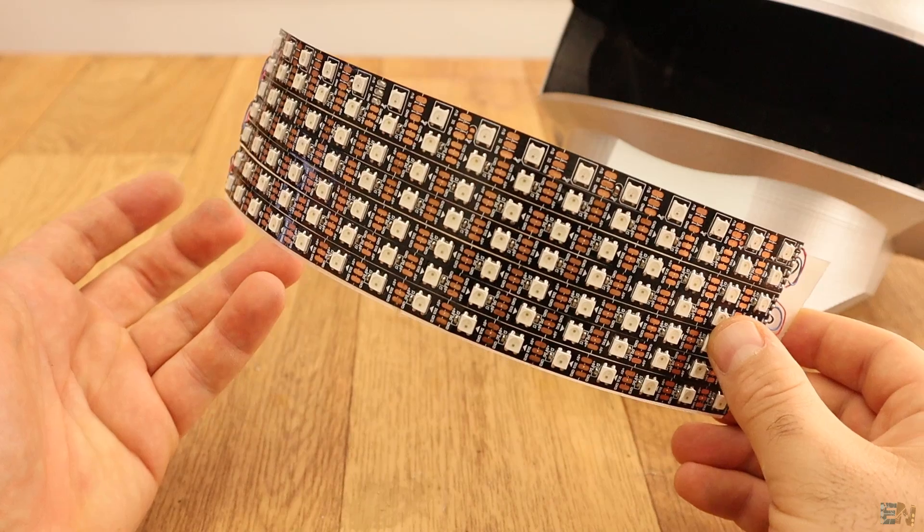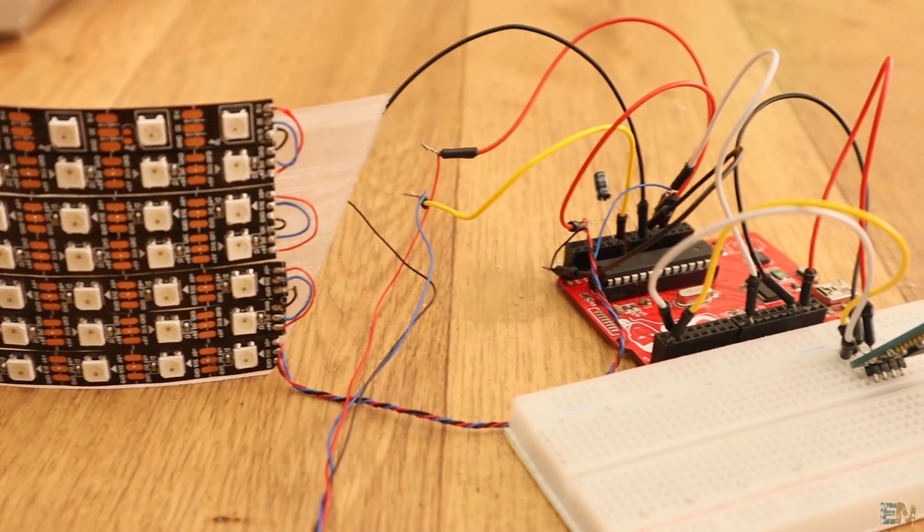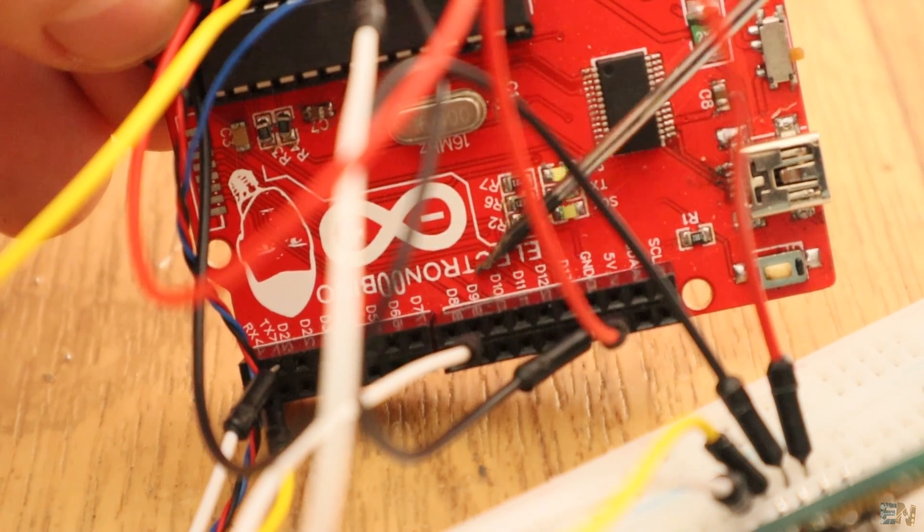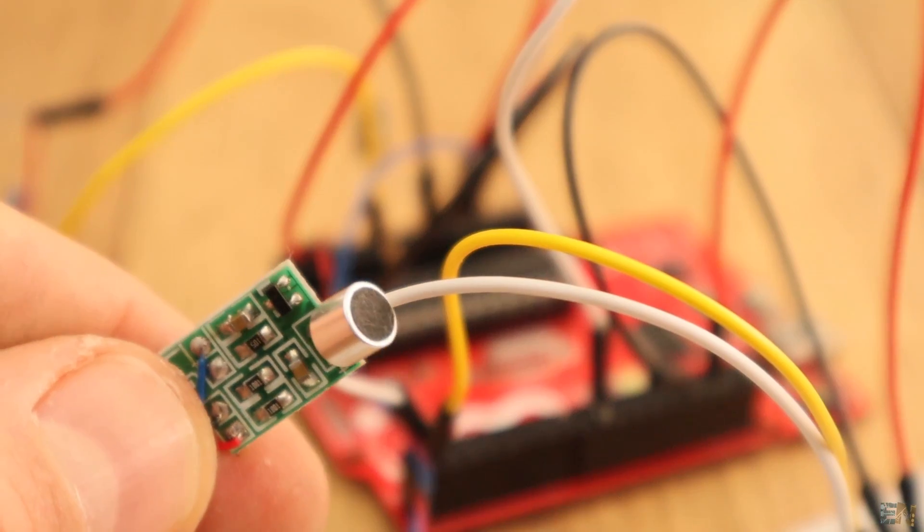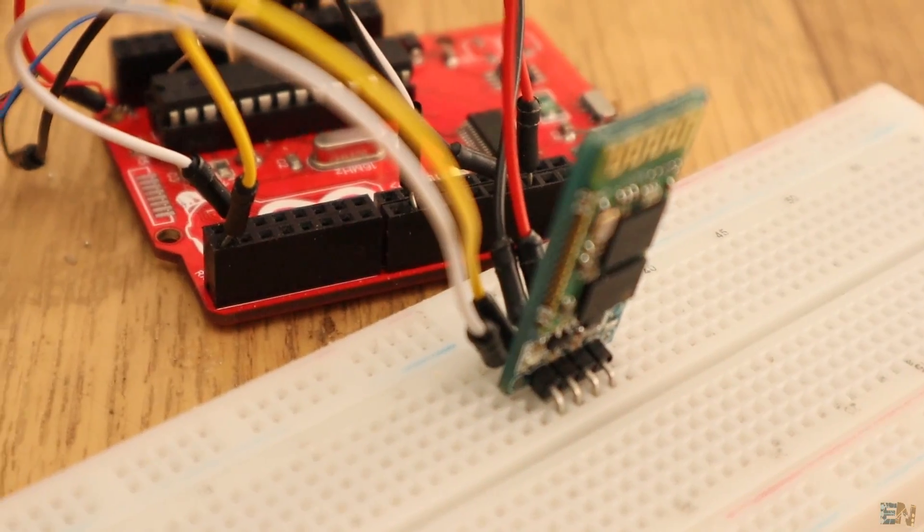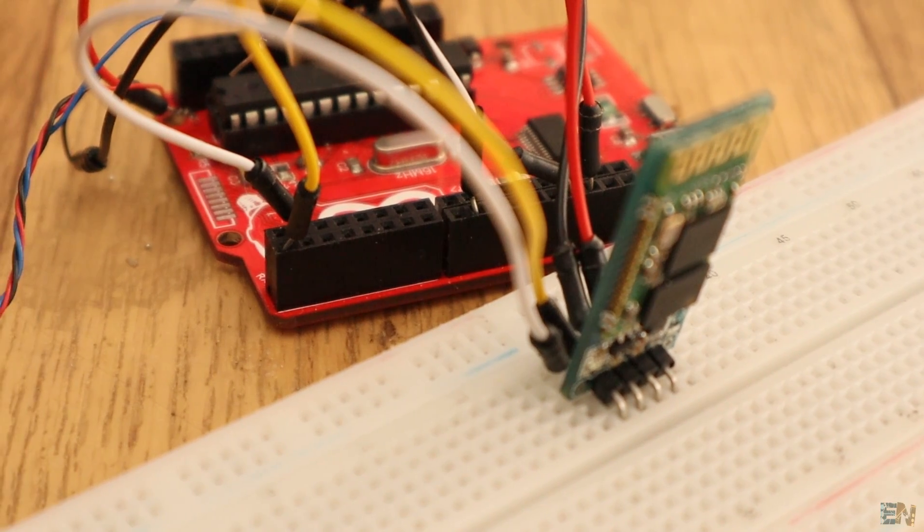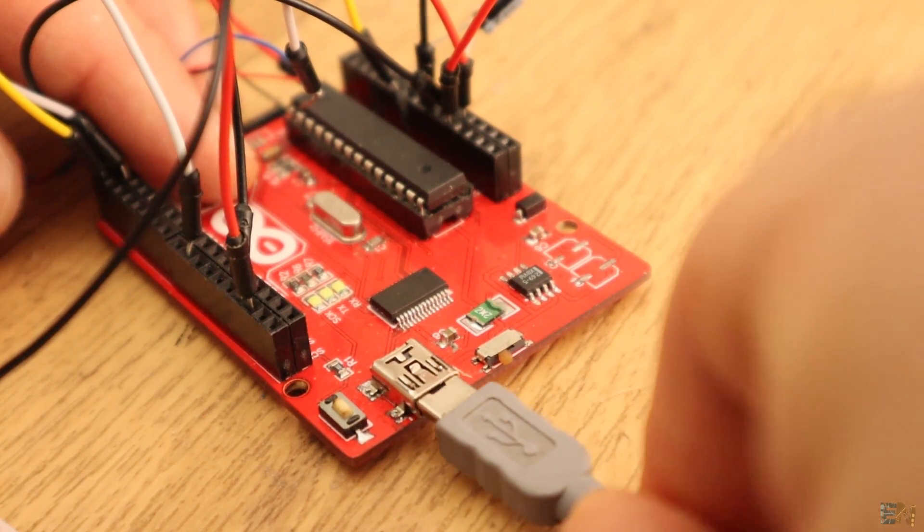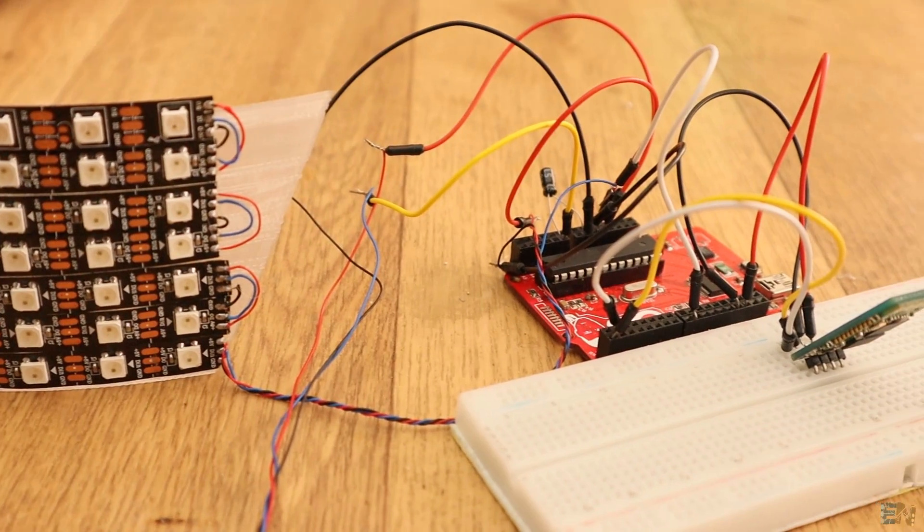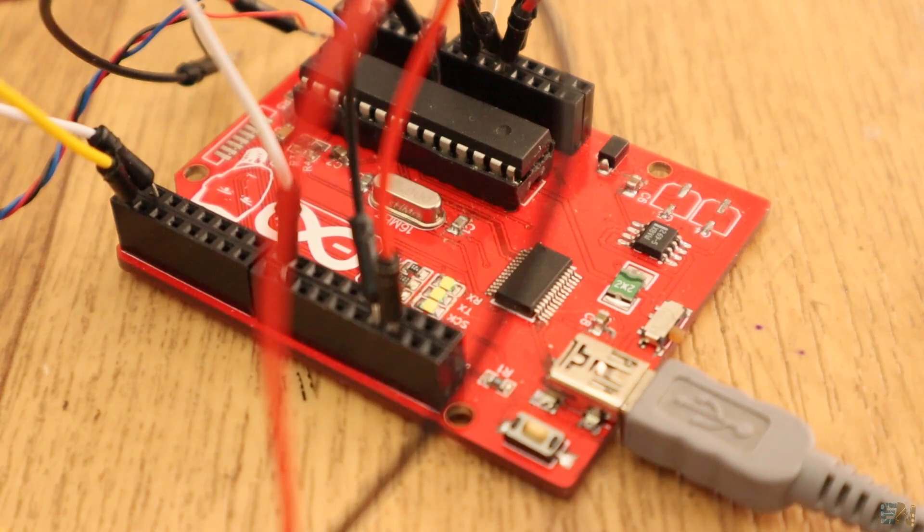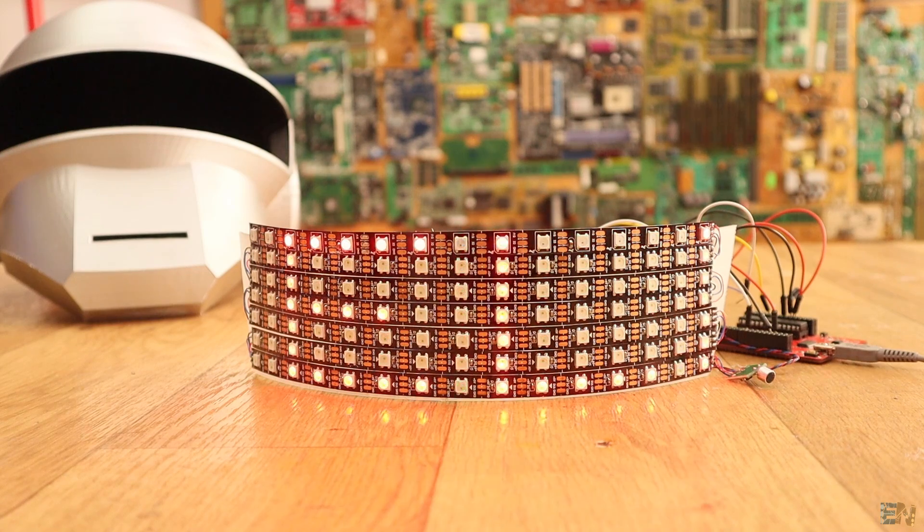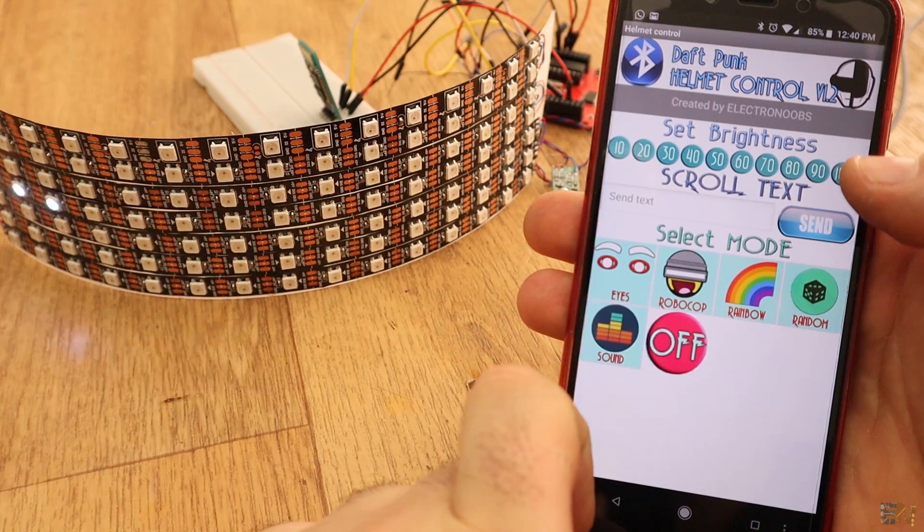Before I put the visor inside of the helmet, I make some tests in order to make sure that everything works. So I connect ground and 5V to one Arduino Uno for tests and the data pin to digital pin D9. I also connect the microphone module to analog input A0 and the Bluetooth module will be connected to the RX and TX pins but after I upload the code. So go below and download the final code of this project. Also make sure that you download and install the NeoPixel libraries. So I upload the code and connect the Bluetooth module. I supply the Arduino with the USB cable for now and give it a test. I make sure that all the modes work using my app on my smartphone.